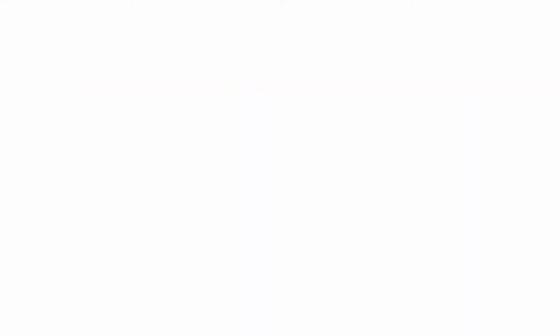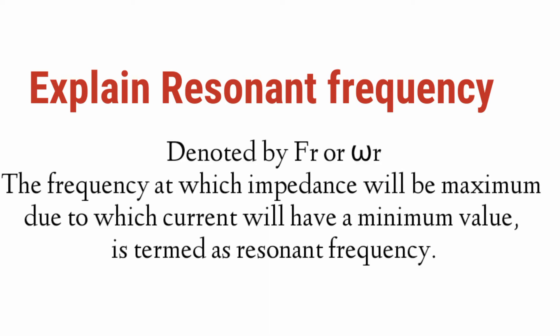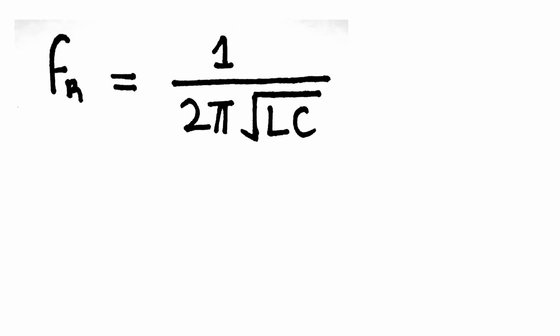The next question: explain resonant frequency. This frequency is denoted by f_r or ω_r. It is the frequency at which impedance is maximum, due to which the current will be minimum. This is known as the resonant frequency.